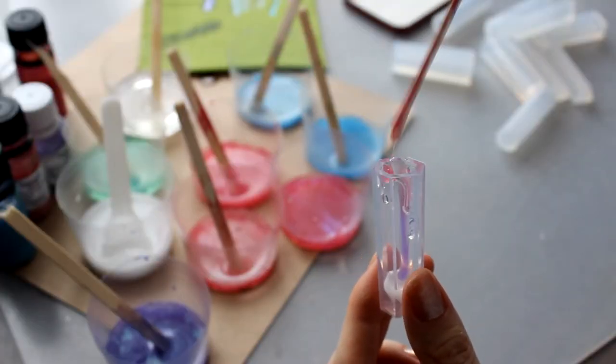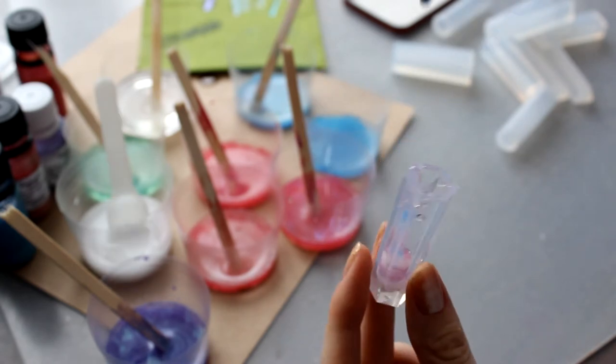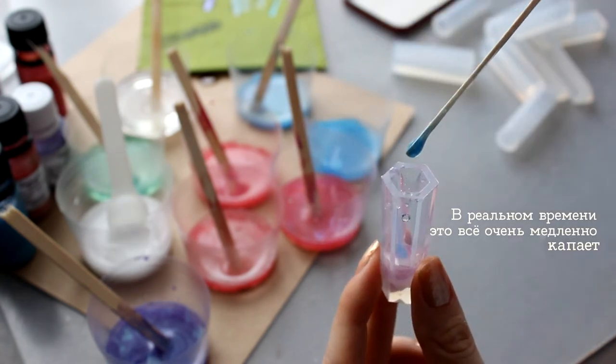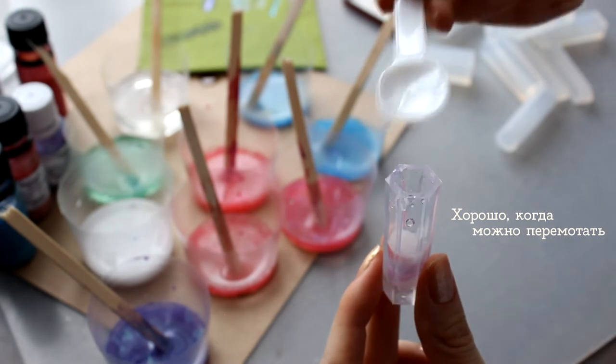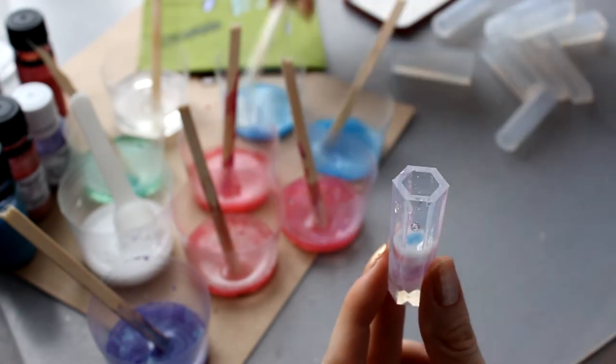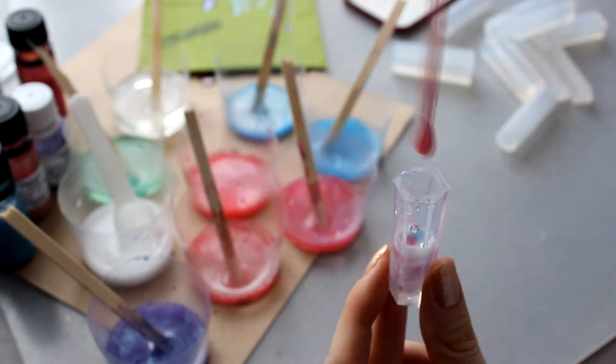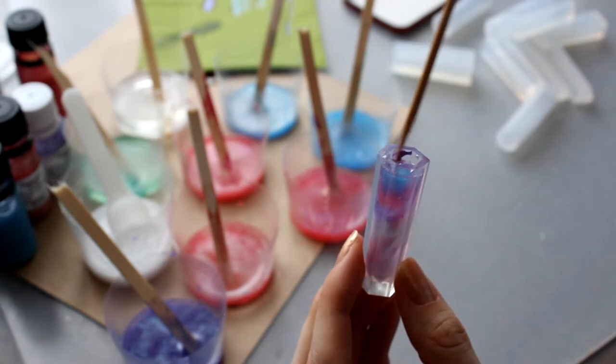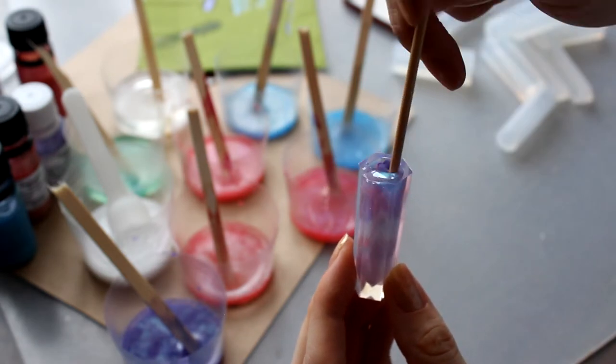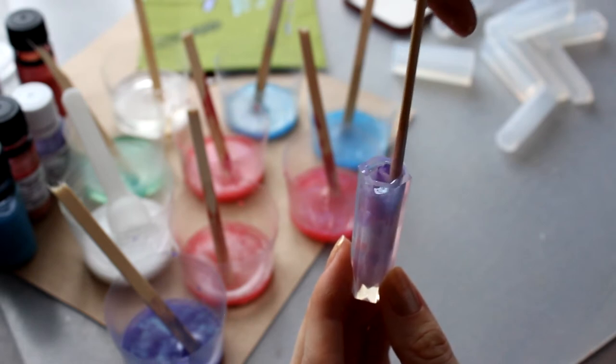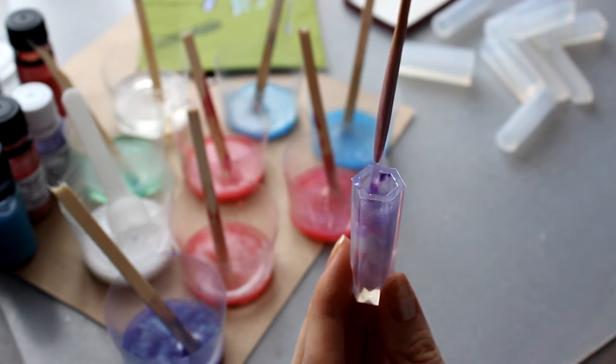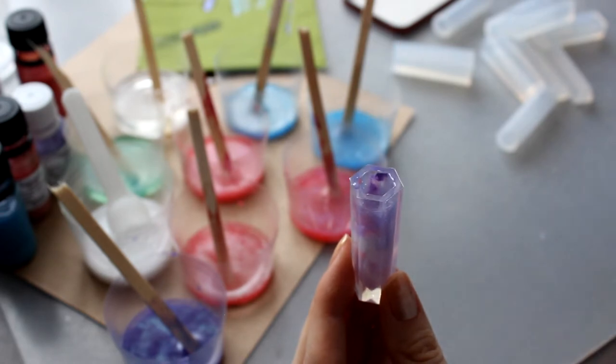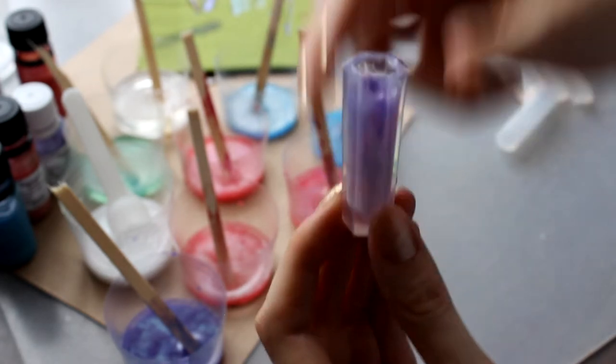After that, you can pour resin into molds. We only need to blend the bonds of the layers between the colors. By the way, as my resin is still pretty liquid, the neighboring colors will blend with each other. As a result, we will get a smooth gradient.